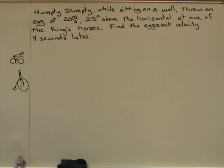Okay, here's our latest problem. Humpty Dumpty, sitting on a wall, throws an egg at one of the king's horses, on which one of the king's men is mounted. The egg's velocity is 20 meters per second, 25 degrees above the horizontal. Your job is to find the exact velocity, which is speed and direction.